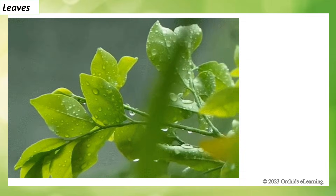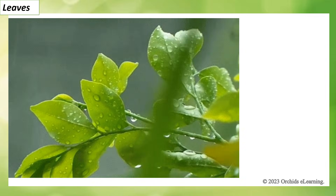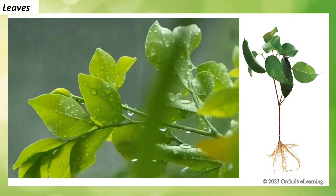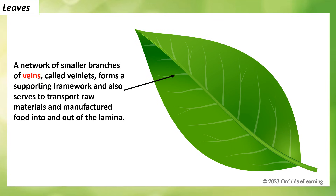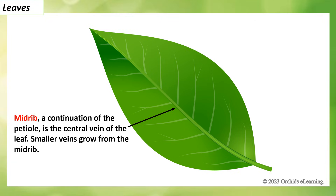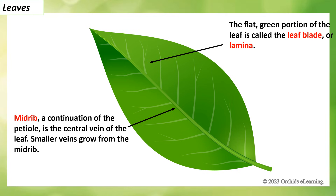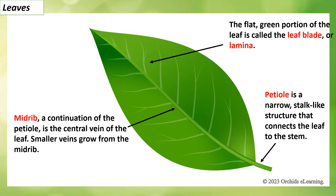Leaves are known as the food factories of the plant. They arise from the nodes of the stems and have a characteristic shape and size. A network of smaller branches of veins called veinlets forms a supporting framework and also serves to transport raw materials and manufactured food into and out of the lamina. The midrib is a continuation of the petiole and is the central vein of the leaf; smaller veins grow from the midrib. The flat green portion of the leaf is called the leaf blade or lamina. The petiole is a narrow stalk-like structure that connects the leaf to the stem.